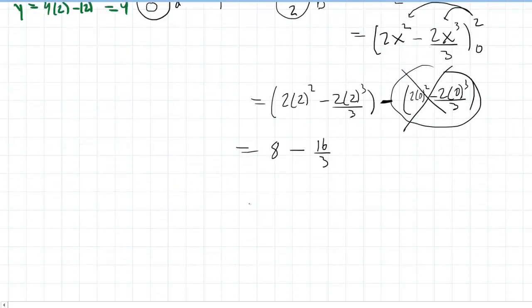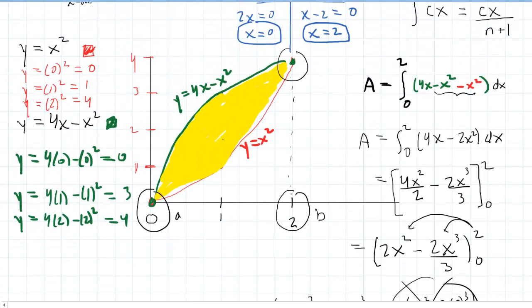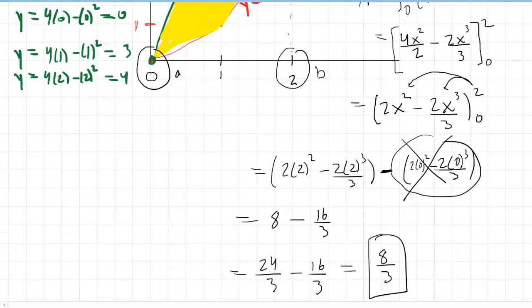And then to finish this off, why don't we look for a common denominator? We can call this 24 over 3 minus 16 over 3. And then when we finish this off, we're going to end up with 8 thirds. So 8 thirds will be the exact area of the region that lies between those two curves.